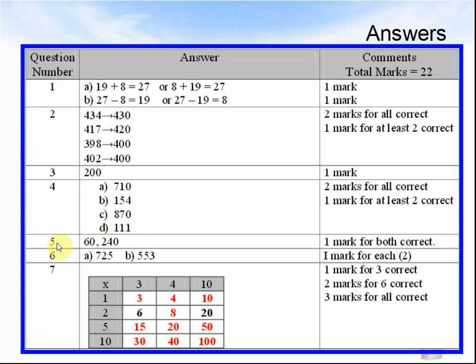Question 5. A was 60, and 240. Question 6. A, 725. And B was 553.